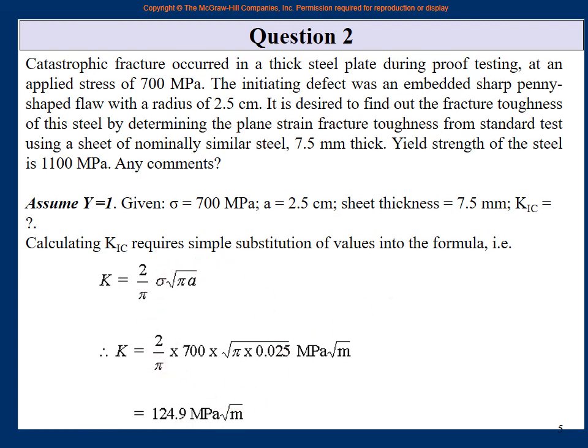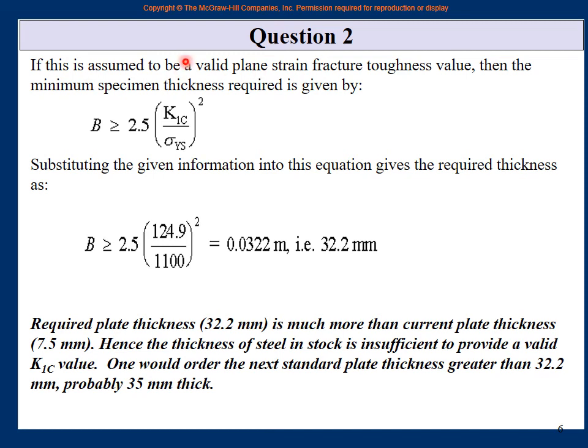If this is assumed to be a valid plane strain fracture toughness value, then the minimum specimen thickness is B ≥ 2.5(K1c/σYS)². We found K1c to be 124.9, σYS was given to be 1100 MPa. So the thickness comes out to be 32.2 mm.